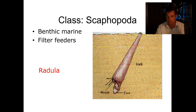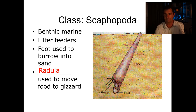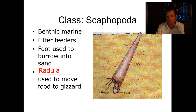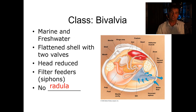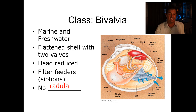The next group is a benthic marine group — benthic means it's on the bottom. They are filter feeders, filtering small particles from the water. They're buried in the ground and use the foot to burrow. They do have a radula, which they use to move food to the gizzard — a specialized stomach where food can be ground up. The class Bivalvia is the only group in phylum Mollusca that doesn't have a radula. They have the other parts — a head, foot, and mantle — and are filter feeders that suck in water and capture food particles.